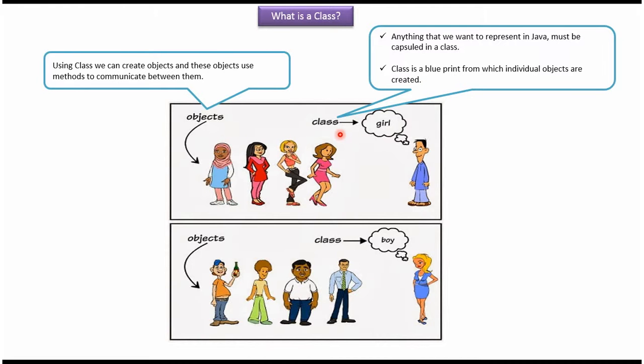And here you can see class girl. Using class girl we can create girl objects. Like that using class boy we can create boy objects. And objects use methods to communicate between them.